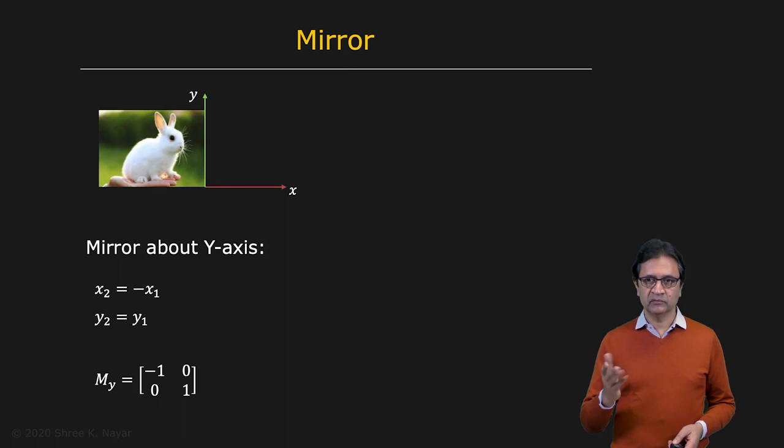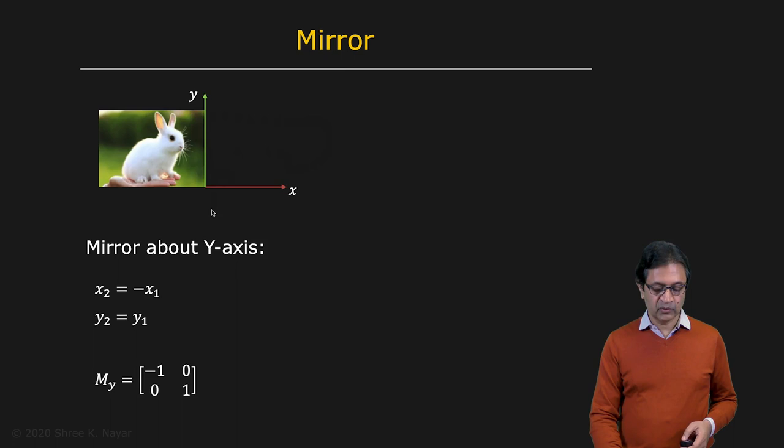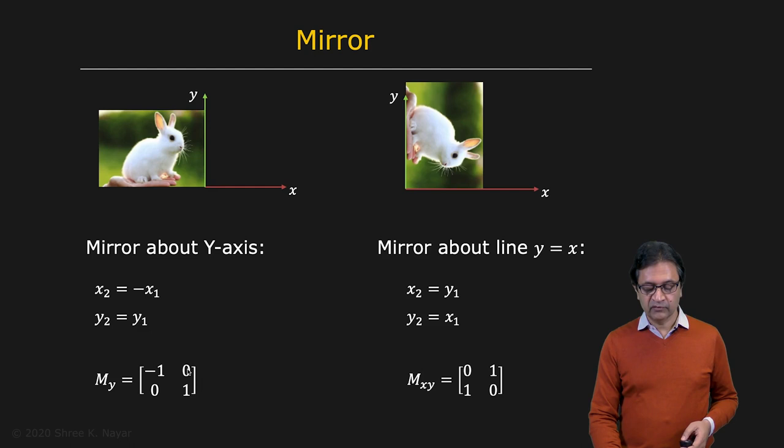And you can do other things like reflection, mirroring an image. Let's say you wanted to take an image and flip it about the Y axis. So you have X2 equal to minus X1 and Y2 is equal to Y1. So you get this very simple matrix right here. We'll call it M, Y.